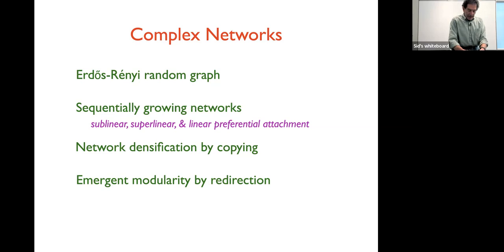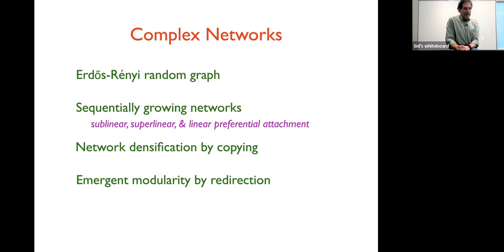I gave the plan last time about what I'm going to talk about, so here's the plan for the next two lectures. I'm not sure I'll get to the very end, but if we don't, that's fine. Let me begin with the so-called Erdős-Rényi random graph, which is the simplest mean-field-like model for network growth.